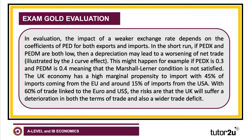Now evaluate. The impact of a weaker exchange rate depends on the coefficients of elasticity of demand for both exports and imports. In the short run, if the price elasticity of demand for exports and imports are both low, then a currency depreciation might actually lead to a worsening of net trade — that's the J-curve effect. For example, if you have a low PED for exports of 0.3 and a low PED for imports of 0.4, that adds up to 0.7, meaning the Marshall-Lerner condition is not satisfied. The UK has a high propensity to import — 45% of imports come from the EU and about 15% from the United States, so 60% of trade is with those two. The risk is that in the short term, the J-curve might actually widen the trade deficit, not improve it.